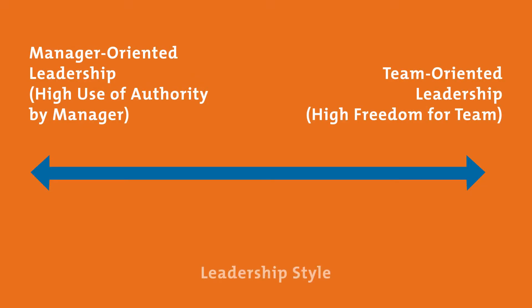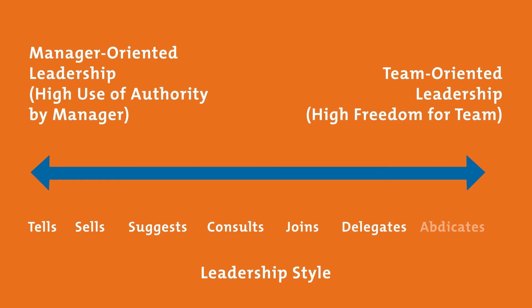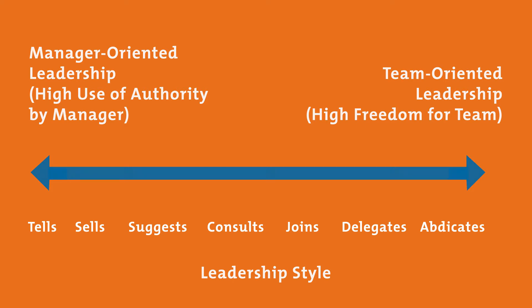Contingency theorists Robert Tannenbaum and Warren Schmidt identified seven leadership styles. They run in a continuum from rigid authority at one end through to full freedom of your team at the other. Let's look at each style in turn.